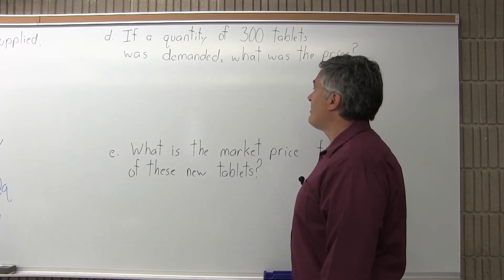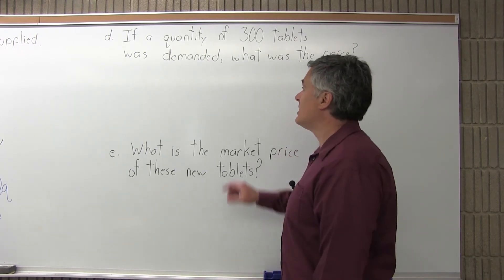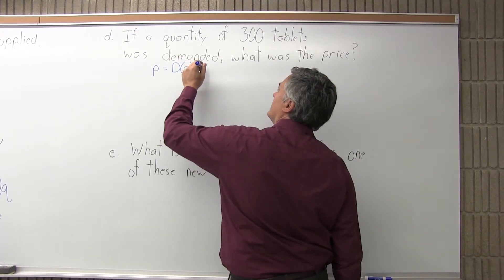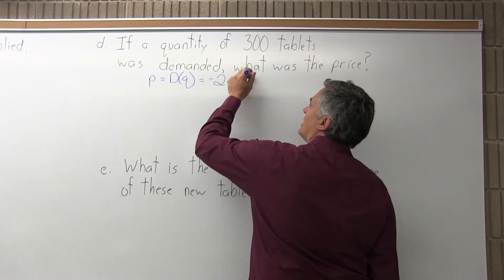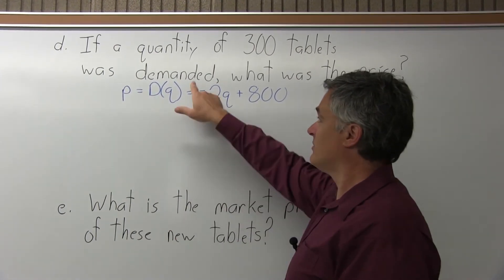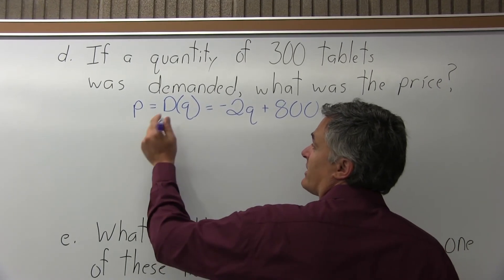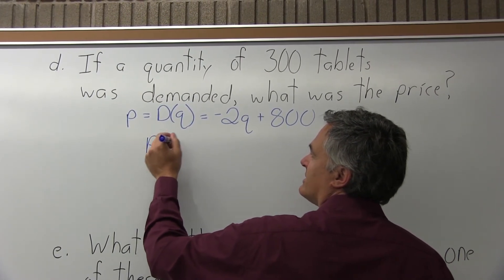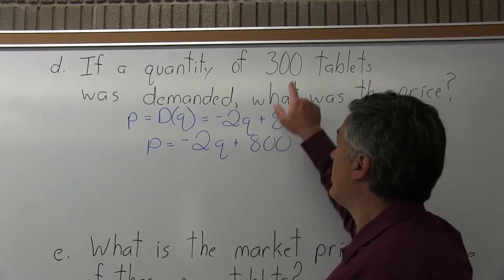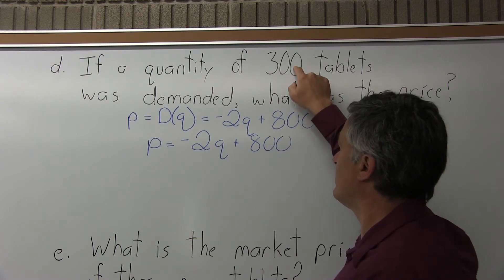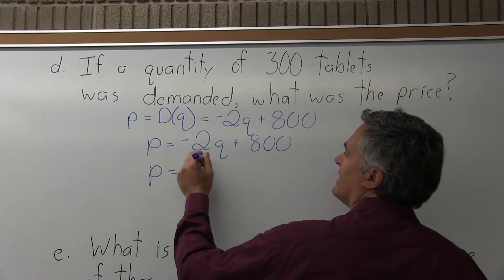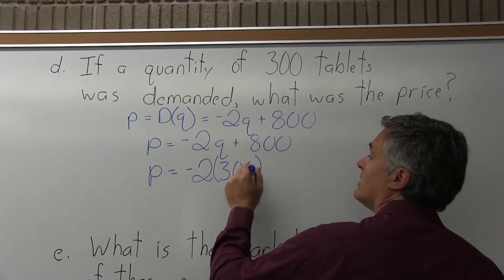Part D says: if a quantity of 300 tablets was demanded, what was the price? Because it asks about demand, I select the demand equation: P equals D(Q) equals negative 2Q plus 800. I picked this one because it's the equation for demand — you don't want to use supply when they ask for demand. Now that I have the correct equation, I'll shorten it. The 300 is a quantity, so it goes in for Q, and I'll solve for P.